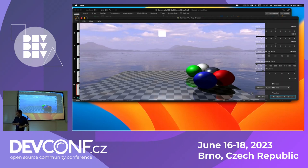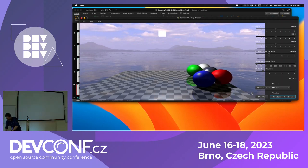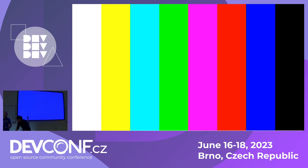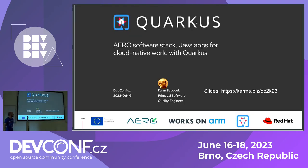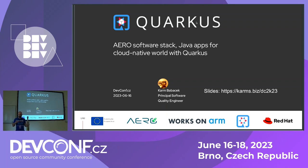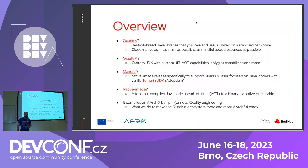I think my time is up — thank you very much. I pass the microphone to Karm to talk about Quarkus. I will be talking about Quarkus, which is a Java framework. It's part of the Aero project and it's a suite of libraries that are tailored to be cloud-native, meaning very small in footprint and resource consumption.